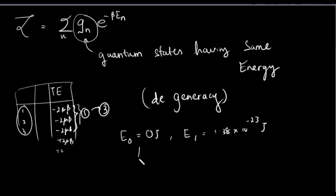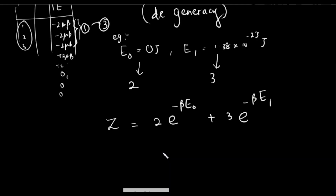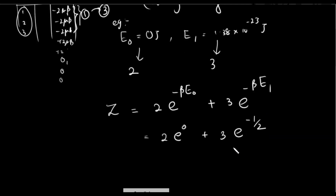With the degeneracy values — for instance, degeneracy of 1 for the ground state and higher values for excited states — the partition function becomes: Z equals 1 plus 2 times e to the power minus beta E0, plus 3 times e to the power minus beta E1, where 2 times e to the power minus beta E1 represents the degenerate contributions. This sets up the full partition function.